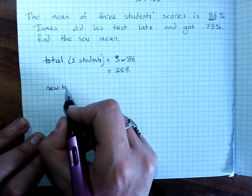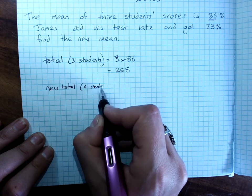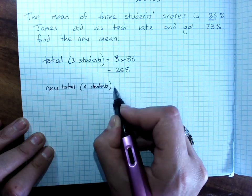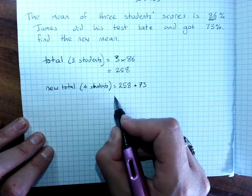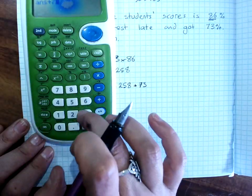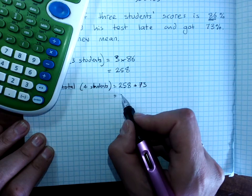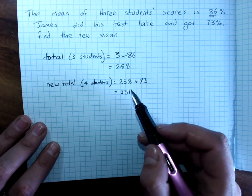Now, James did his test late and got 73%. So, the new total with four students is the original total that they got plus James' score, 331.